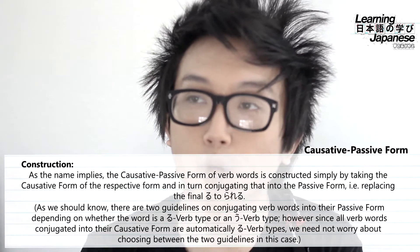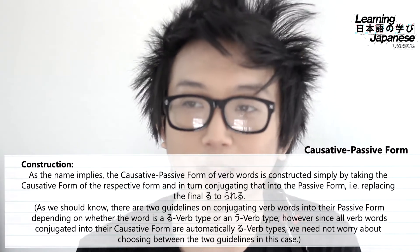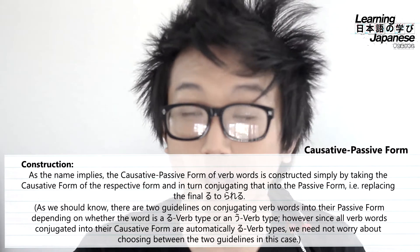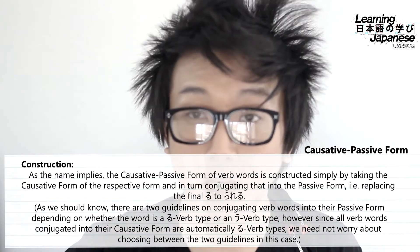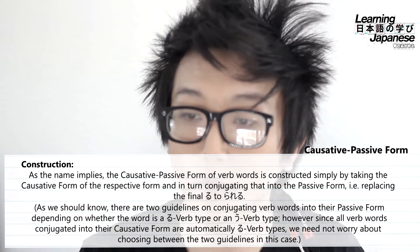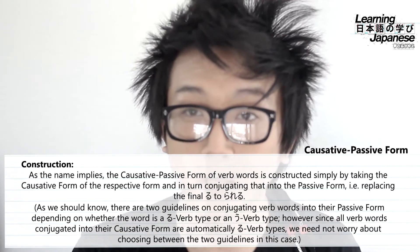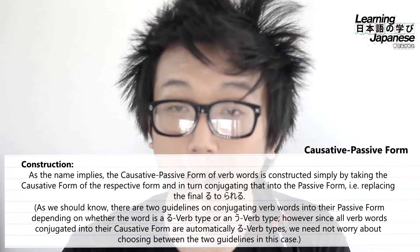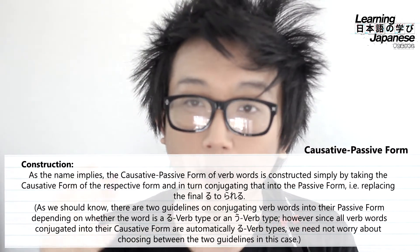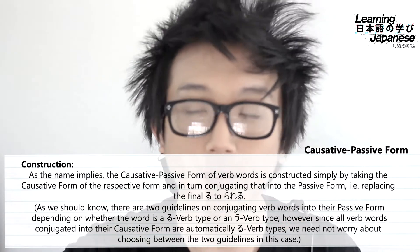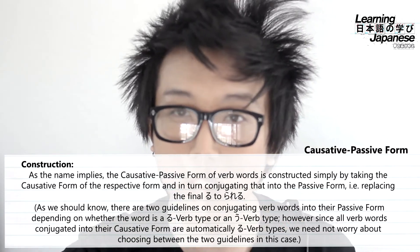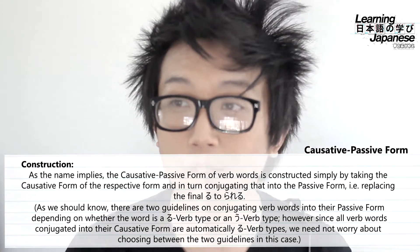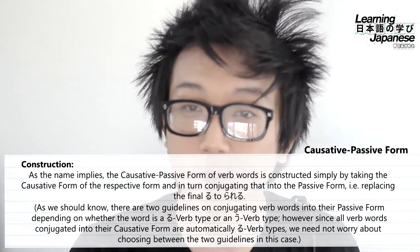Most of the time this will result in a word ending with the long sound saserareru. That's not always going to be the case because of the conjugation guidelines for causative form — the sa at the beginning will sometimes be something else — but the last sound will always end in a. So basically all words conjugated into the causative passive form will end in aserareru. Now let's jump into some example verbs.